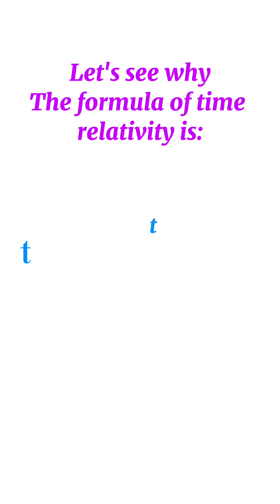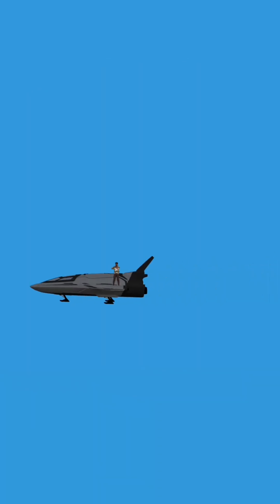Let's see why the formula of time relativity is T equals to T0 divided by 1 minus V squared divided by C squared.